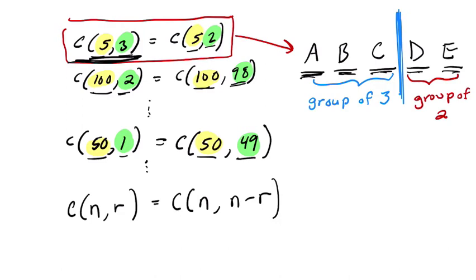And in mathematics, that's happening down here. For each group of r I pick out, I'm leaving out n minus r choices. So those are going to give you the same number of groups.